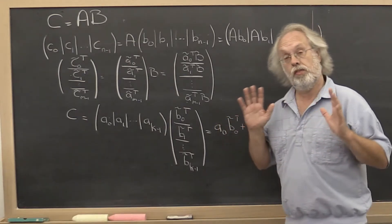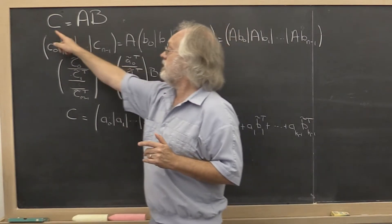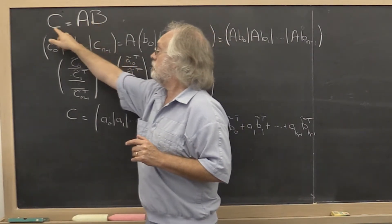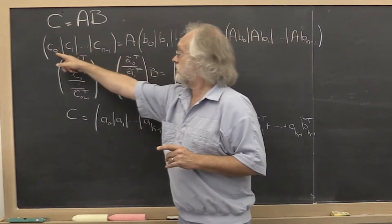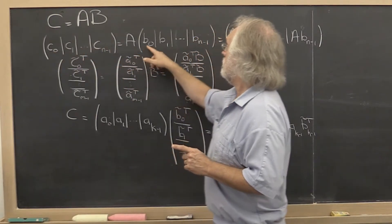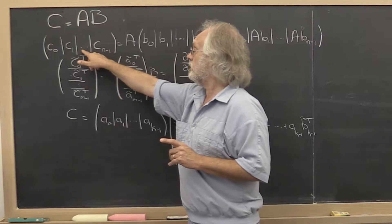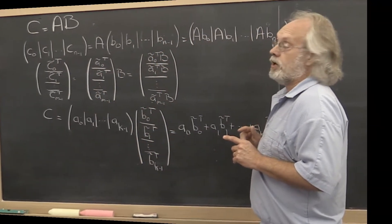And this is the idea. What have we just seen? We've seen that the definition of A times B to compute C is to say, look, partition C by columns, partition B by columns, and then the jth column of C is just A times the jth column of B.